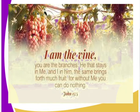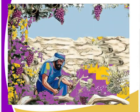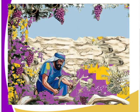In our class, get to memorize that verse. Now the dead branches of the vine trees are cut off and the living ones are trimmed or pruned. This is done so that the vines may produce high yields. Likewise, unfaithful Christians and believers are corrected so as to bear high yields. Look at what the vine dresser is doing — pruning those branches that are not giving fruits, while those other branches have given good fruits.